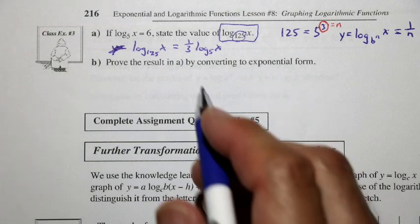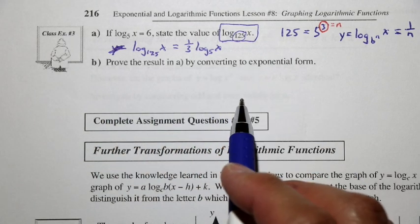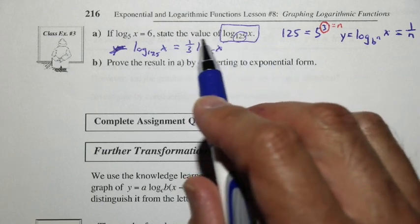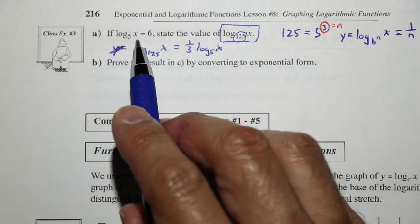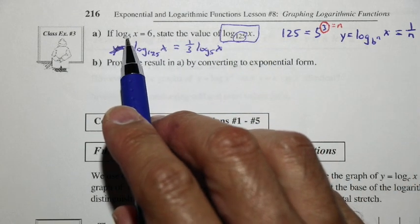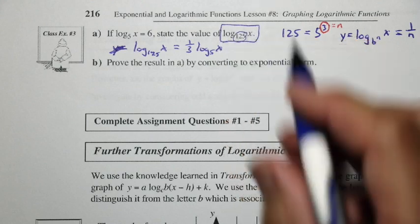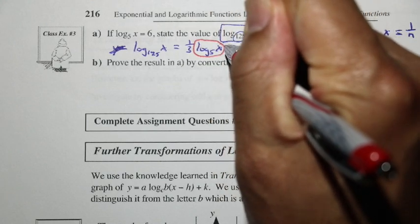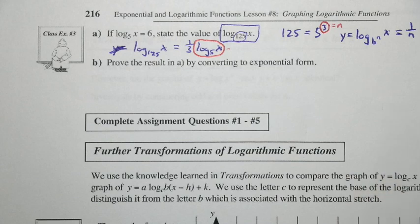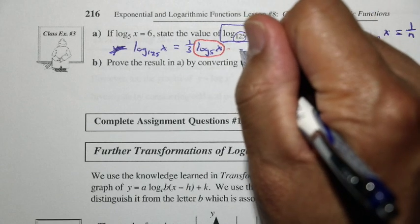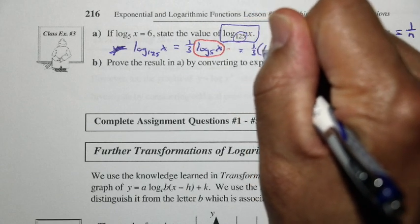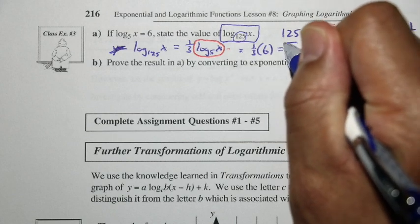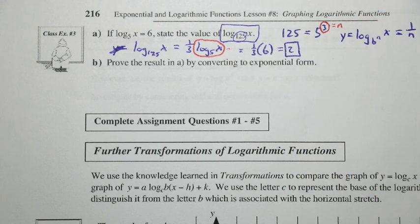Before we prove the result, let's find the value using the information that log base 5 of x equals 6. So this value is equal to 6, which means we have 1 third times 6, and 1 third of 6 is equal to 2. So our final value is 2.